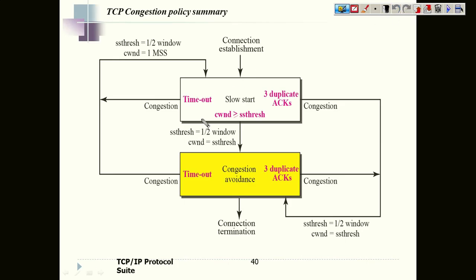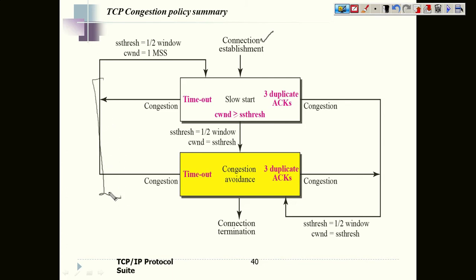We have already defined the TCP congestion policy, which actually works on three phases. If you look at the entire TCP connection, we have three phases: the first is to establish a connection, the second is called the data transfer phase where the entire data is transferred between the two communicating parties, and then we have connection termination which is called the teardown phase. Congestion is normally taken care of in the data transfer phase, which is phase two.